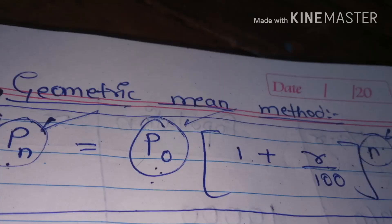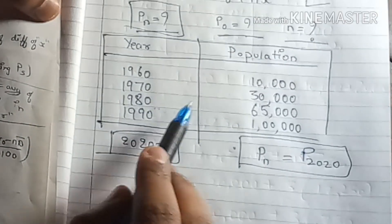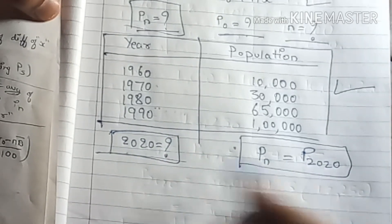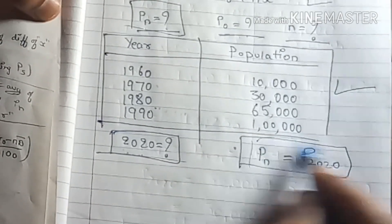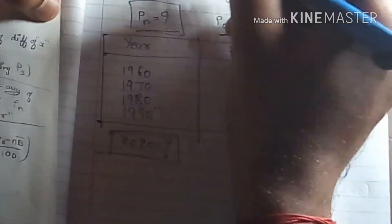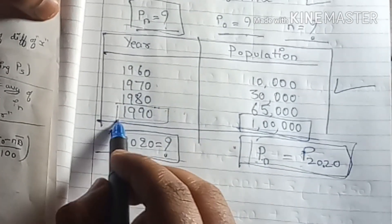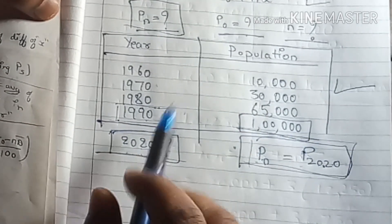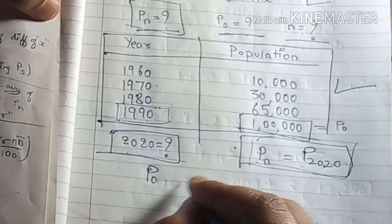In the formula Pn = P0 × (1 + r/100)^n, P0 is the population in the last known decade. The last known decade is 1990, after which the population is not known — 2000 and 2010 populations are unknown. But the 1990 population is known and that is 1 lakh. So P0 = 1 lakh.